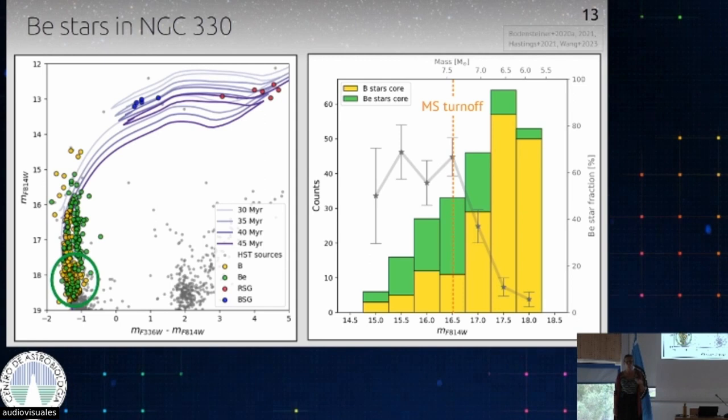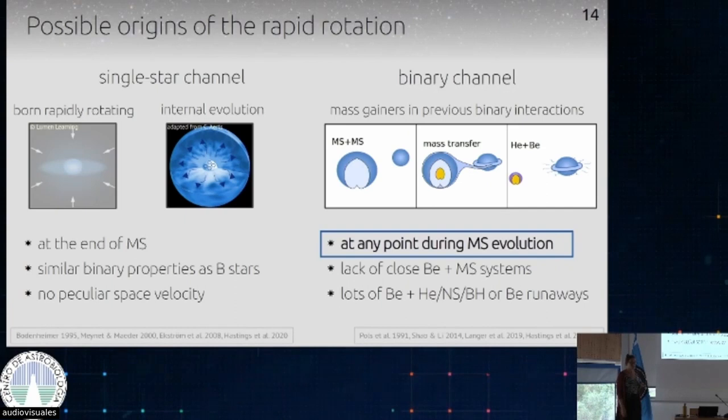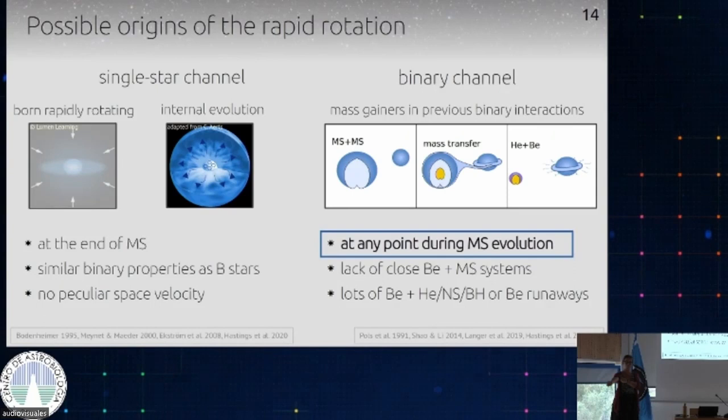Taking the y-axis and making a histogram — counting how many B-type stars versus BE stars there are — you can see that above the turnoff, roughly 50–60% of stars are BE stars. But the fraction drops, and there are still BE stars that are much fainter than the cluster turnoff. This indicates some are not at the end of the main sequence evolution. At least those fainter ones were probably produced in binary interactions, because according to the single-star channel, this should only occur at or above the turnoff.